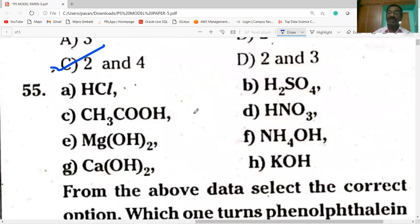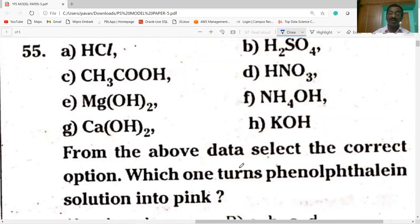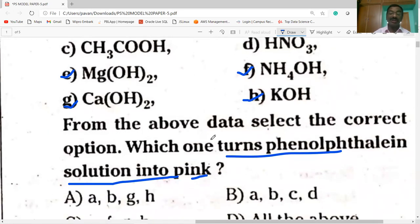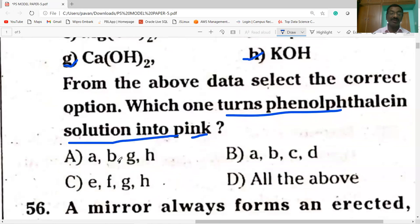Next question. HCl, H2SO4, CH3COOH, HNO3, Mg(OH)2, NH4OH... From the above data, select the correct option which one turns phenolphthalein solution into pink. E, F, G, and H, these four are bases. So option C is correct.